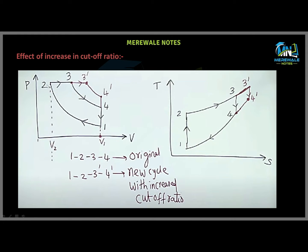The net work output, which we use to calculate efficiency, is calculated with the help of the PV diagram. The original cycle 1-2-3-4-1 has less area compared to the new cycle 1-2-3-dash-4-dash-1. This new cycle with increased cutoff ratio has more area, meaning greater net work output than the original cycle. So both net work output and heat supplied are increasing. With the help of mathematical values and the diagram slopes, we can infer that the efficiency will decrease.